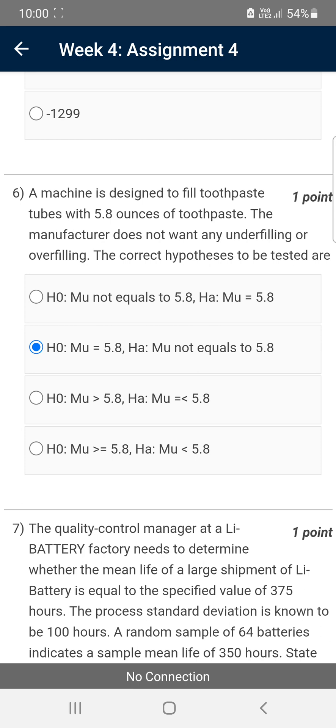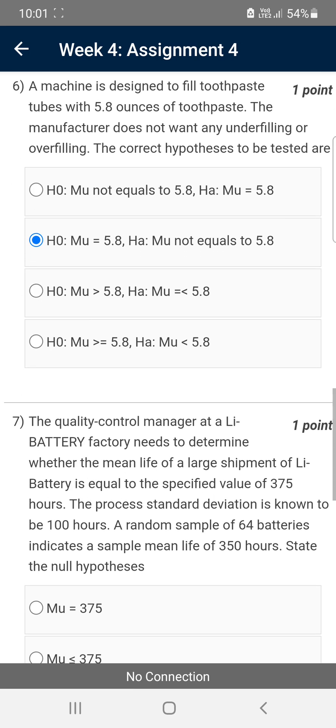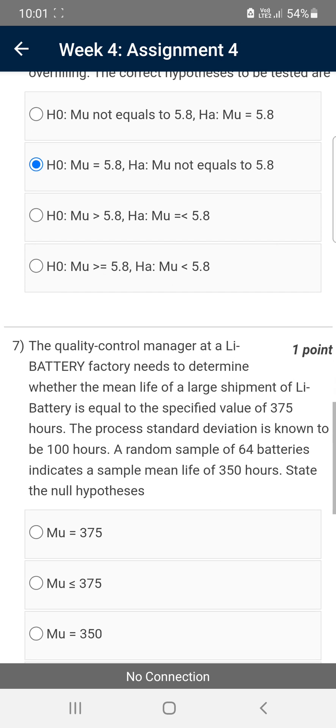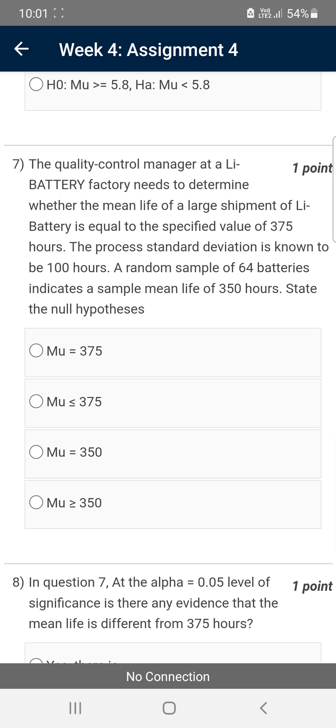Moving on to the seventh question. The quality control manager at a lithium battery factory needs to determine whether the mean life for a large shipment of lithium batteries is equal to the specified value of 375 hours. They are asking state the null hypothesis. For the seventh question, the probable solution could be the fourth option: mu greater than or equals 350.